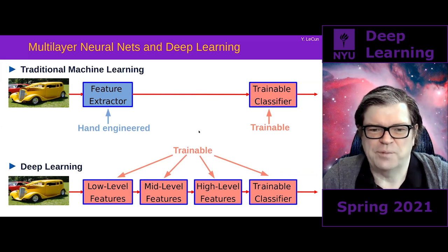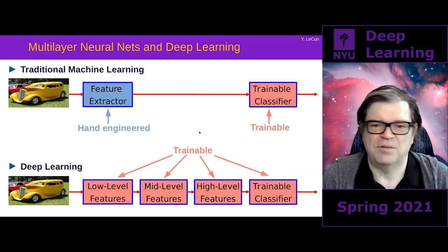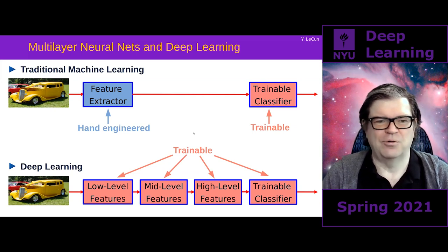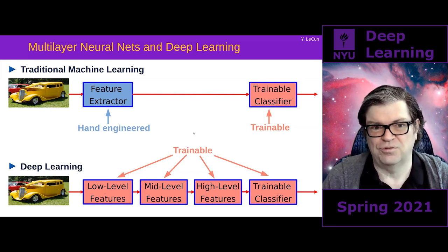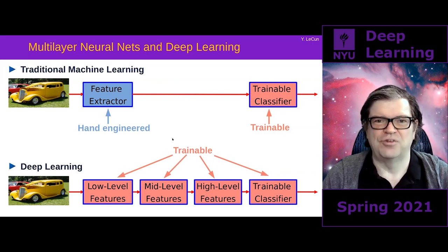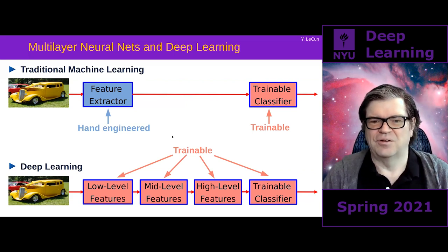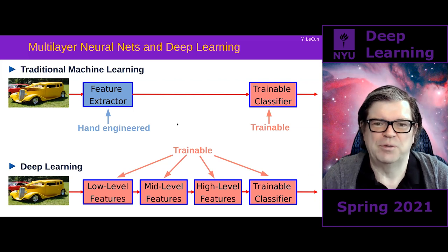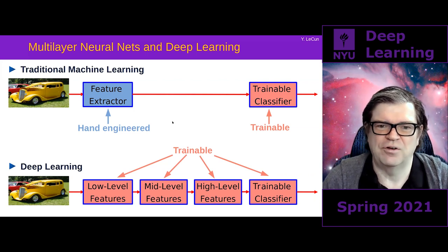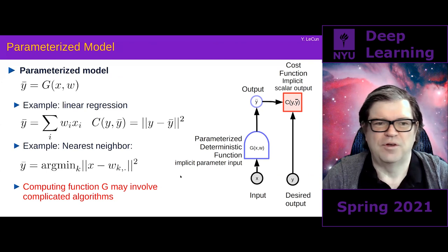The idea for this goes back a long time. The practical methods go back to the mid-to-late 80s with the backpropagation algorithm, which is going to be the main subject of today's lecture. But it took a long time for this idea to percolate and become the main tool people use to build machine learning systems — it's only about 10 years old. Let's go through a few definitions.